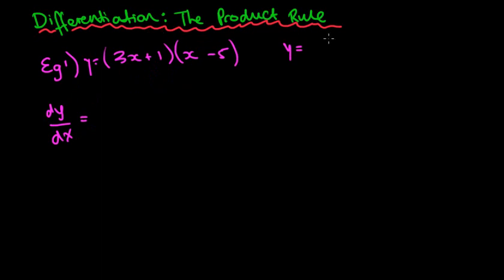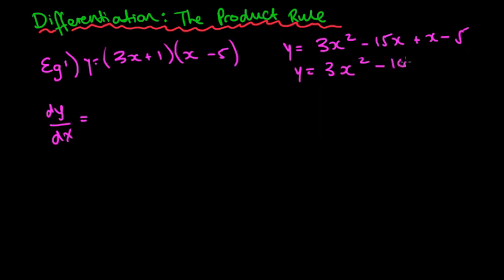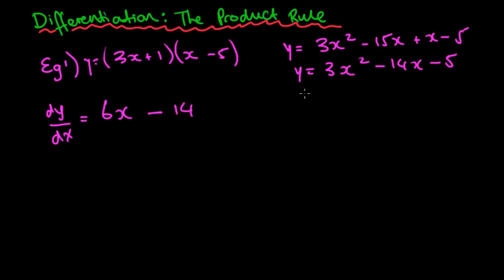If I expand the brackets we get 3x² − 15x + x − 5, which simplifies to 3x² − 14x − 5. Now we can differentiate that with respect to x. So 2 times 3 is 6x to the power of 1, minus 1 times 14 is 14. x to the power of 0 is just 1, so we get 6x − 14, and that minus 5 disappears because differentiating a constant gives zero.